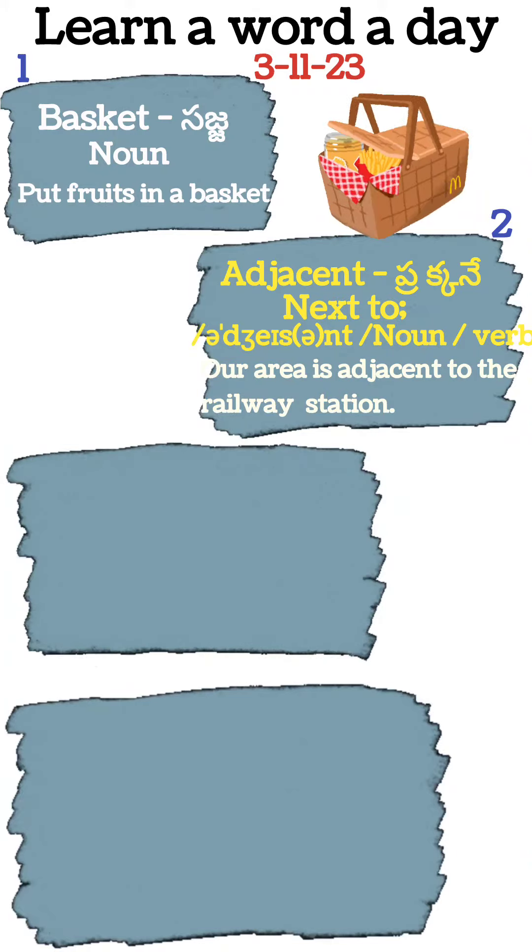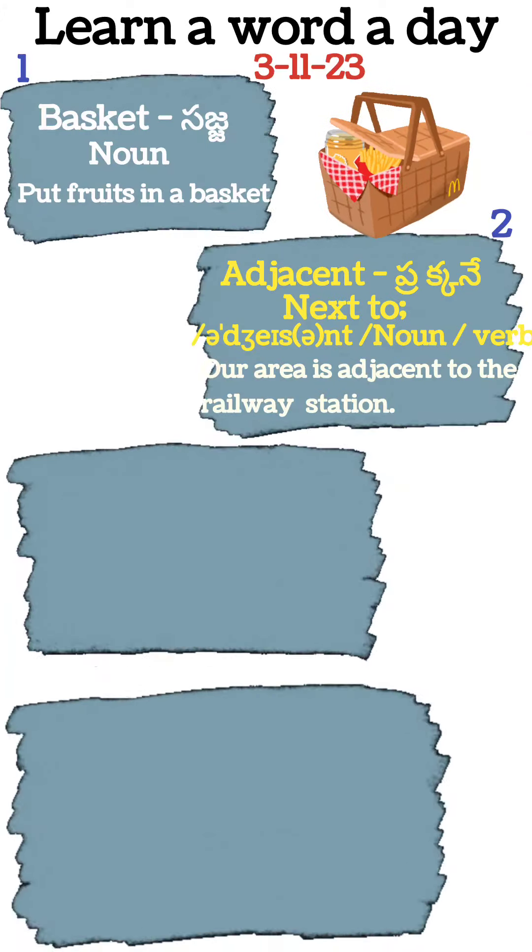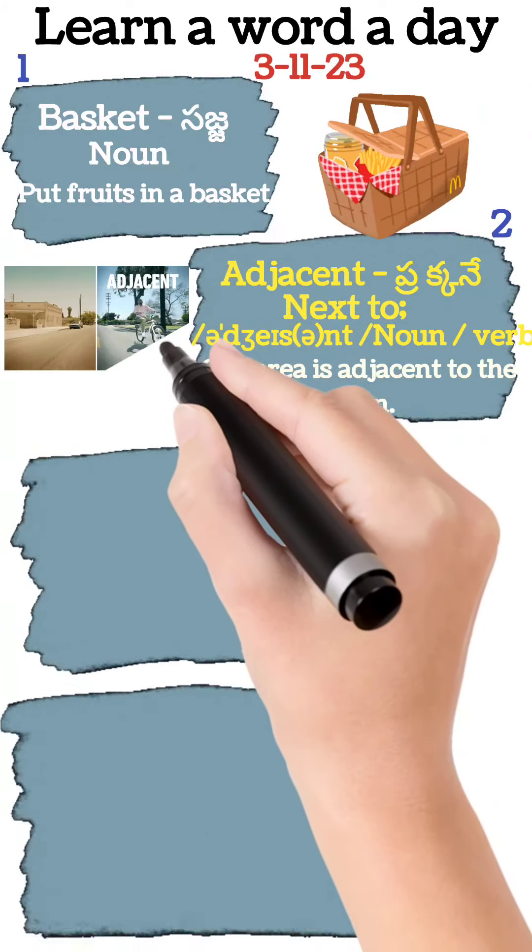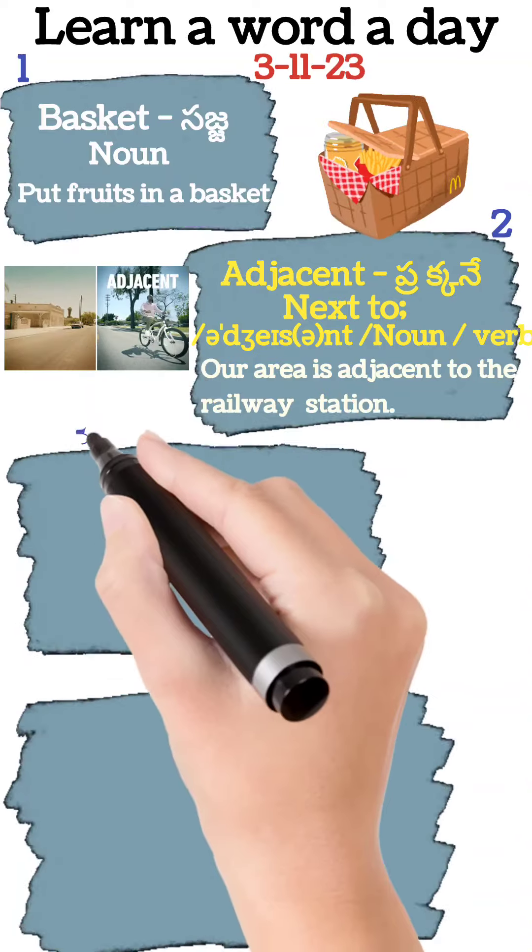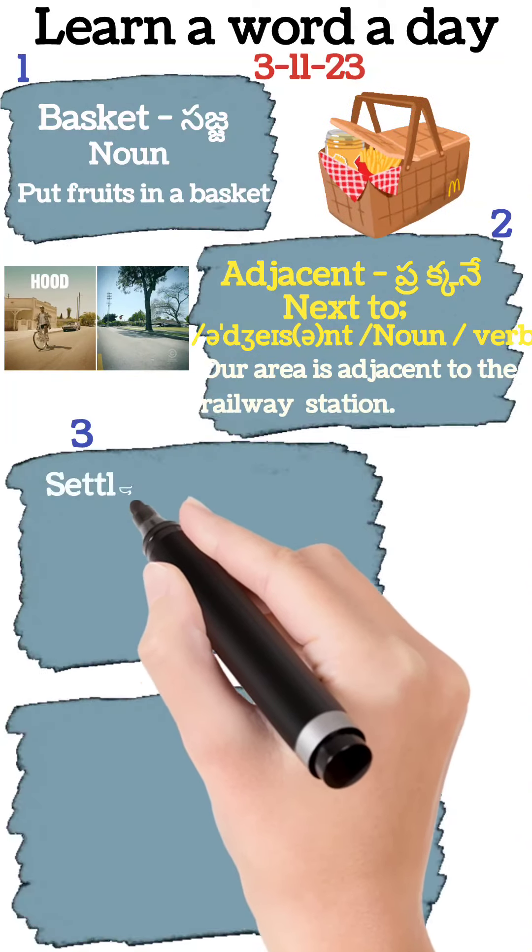It is a noun and verb. Our area is adjacent to the railway station. Our area is adjacent to the railway station.